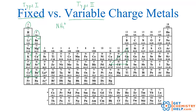Now the ones over here in the magic triangle also don't change their charge. Aluminum, gallium, and indium like to be 3+. Zinc and cadmium like to be 2+. And silver likes to be 1+. So there are three that are 3+, two that are 2+, and one that's 1+.